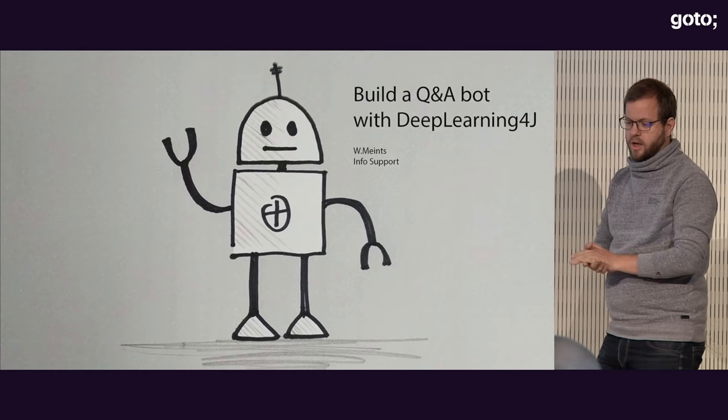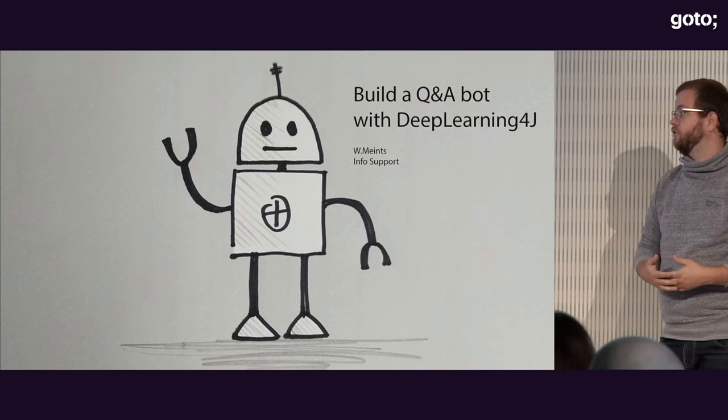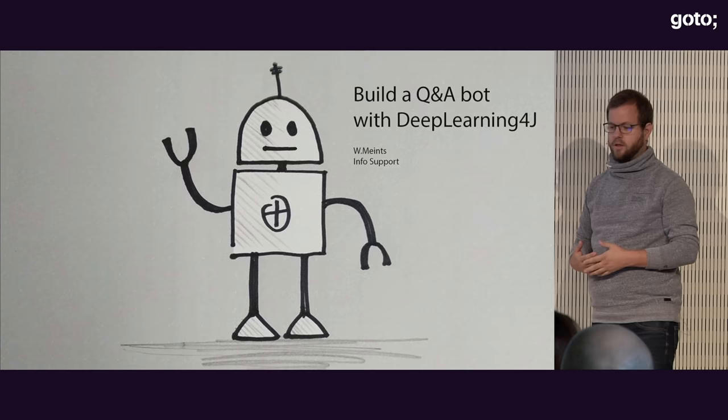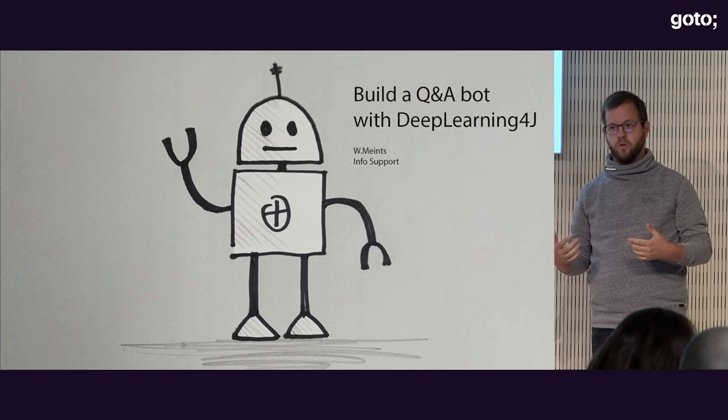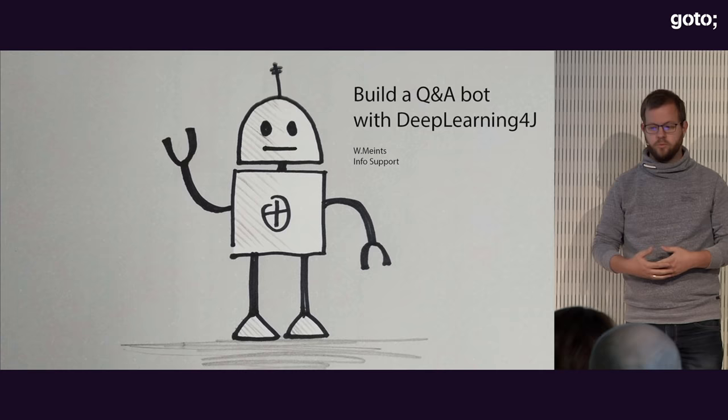I'm Willem Wenz. I'm a technical evangelist and AI engineer. We don't have an official title for me yet, but we'll get there someday. I do a lot of work in artificial intelligence and machine learning. I specifically help customers get started with building things like chatbots, solving image recognition problems — that sort of stuff. That's what I normally do.